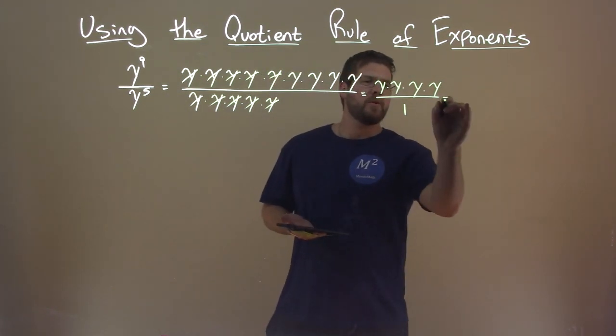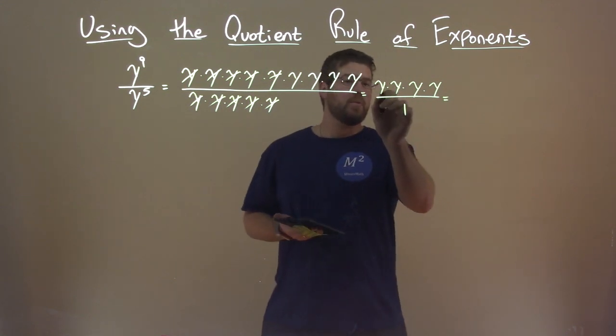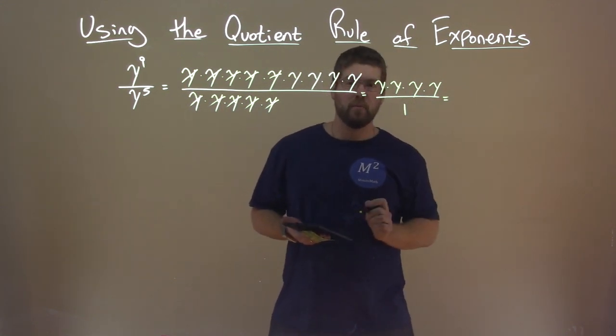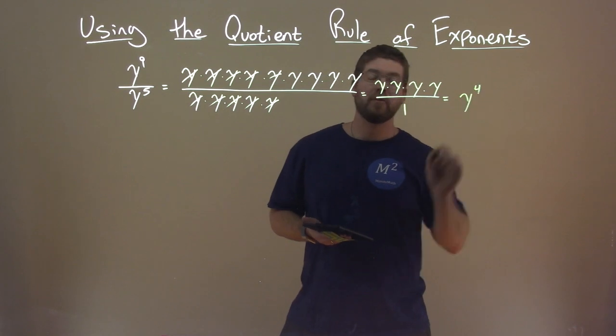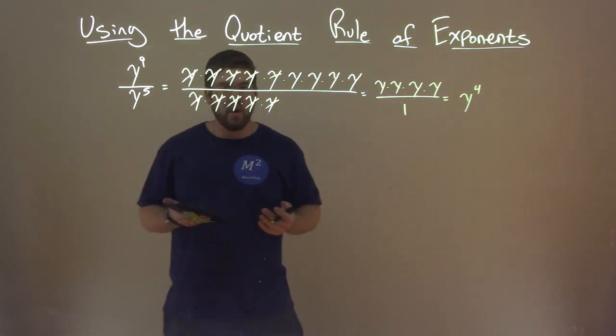Well, this simplifies. We don't really need to have dividing by one. So, the numerator is just y times y times y times y, which is y to the fourth power. So, how does this apply, really, to the quotient rule?